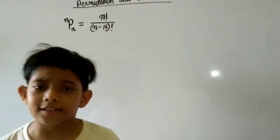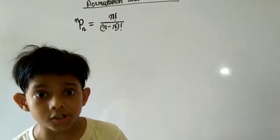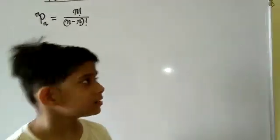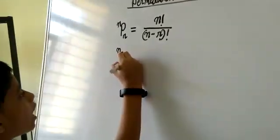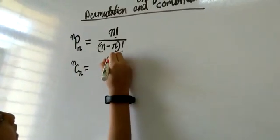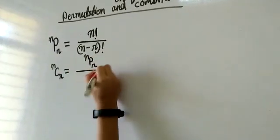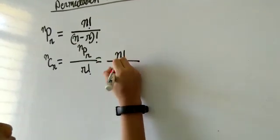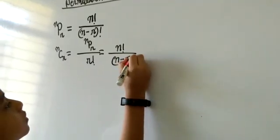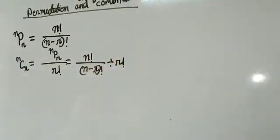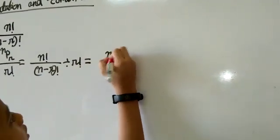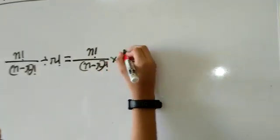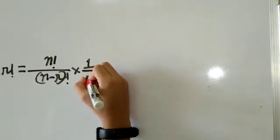Combination covers all possible ways to find out a solution without any order or position. In mathematical notation, C(n, r) equals P(n, r) divided by r factorial, which equals n factorial divided by (n minus r) factorial divided by r factorial, which simplifies to n factorial divided by (n minus r) factorial times (1 divided by r factorial).